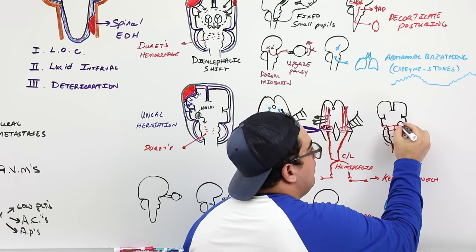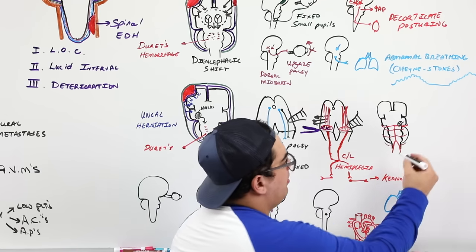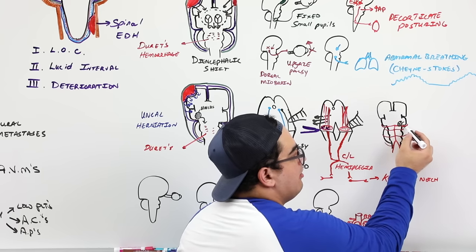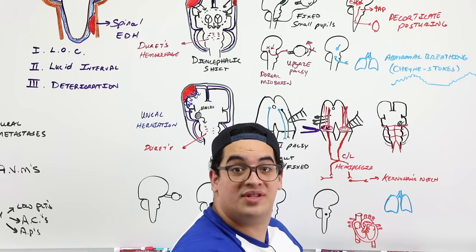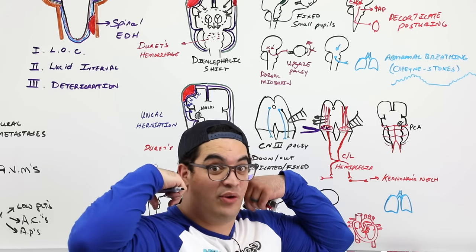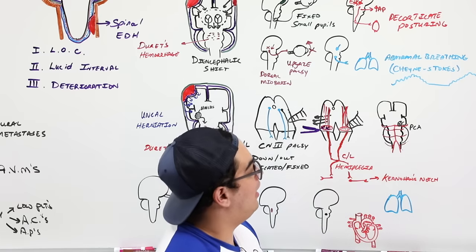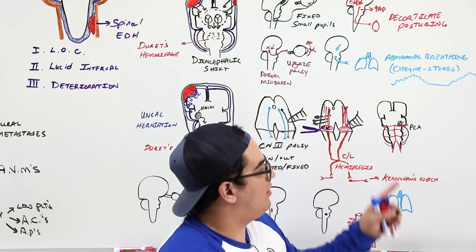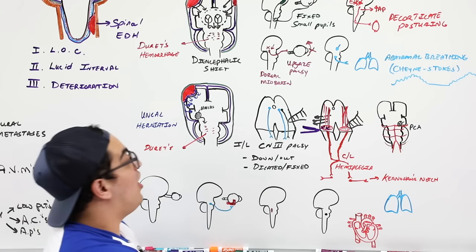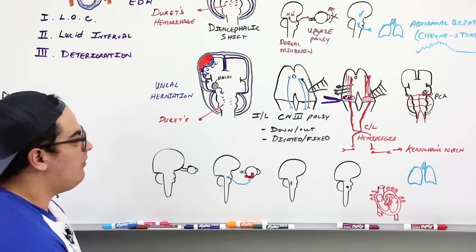Uncal herniation can also compress the posterior cerebral artery, affecting the visual center and potentially causing homonymous hemianopia, thalamic involvement, and midbrain dysfunction — similar to a PCA stroke syndrome. This is one of the most important herniation syndromes to remember.